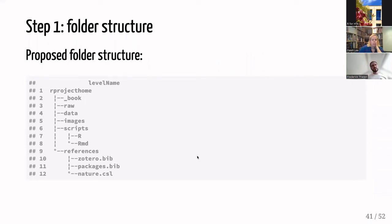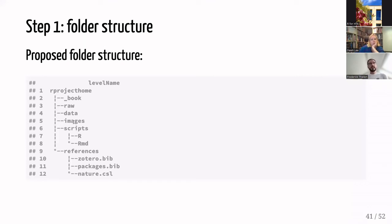Folder structure: at the project home level, the underscore_book folder is created automatically by bookdown. I have 'raw' and 'data' folders for raw and cleaned data, an images folder, scripts for R and R Markdown files, and a references folder. In the references folder you'll have your Zotero library, packages bib file, and a CSL file.